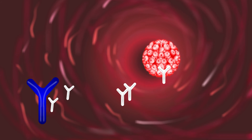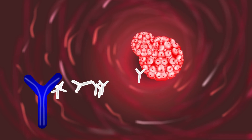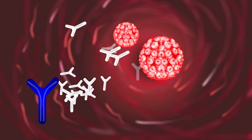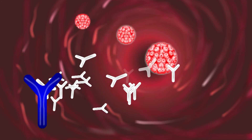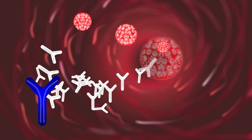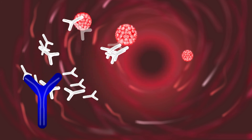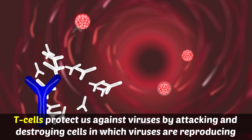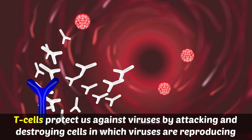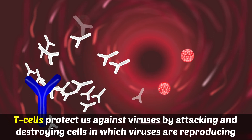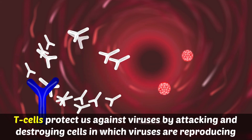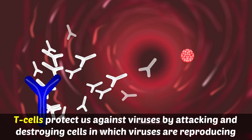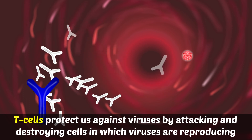Lymphocytes called B cells can produce proteins called antibodies that can get attached to bacteria and destroy them. T cells protect us against viruses by attacking and destroying the cells in which viruses are reproducing.